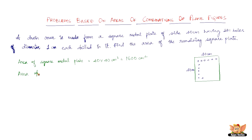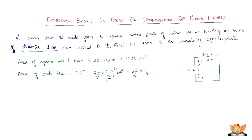First, let's find the area of each hole. Area of each hole is given by π r², since it is a circular hole. π is 22/7 and the radius is 0.5 cm, or 1/2, because the diameter is 1 cm. So in place of the radius, we substitute 1/2 squared, which is 1/2 times 1/2 cm². We get 22/7 times 1/2 times 1/2, which is 11/14 cm².